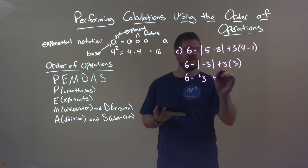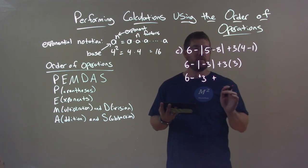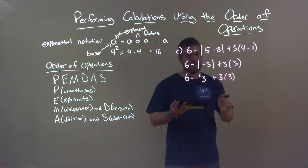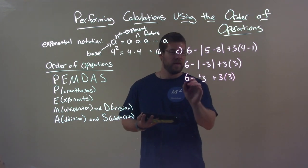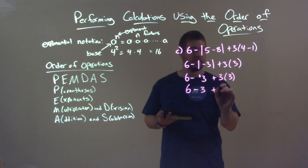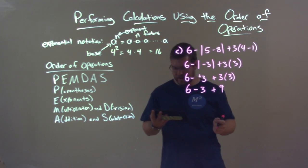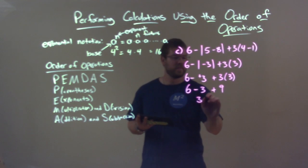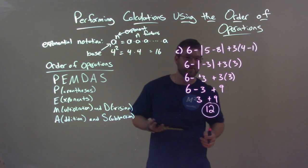So we have 6 minus 3 plus 3 times 3. There are no exponents, so multiplication next: 3 times 3 is 9. Now we have 6 minus 3 plus 9. We read left to right for addition and subtraction: 6 minus 3 is 3, bring down the 9, and 3 plus 9 is 12. So our final answer is 12.